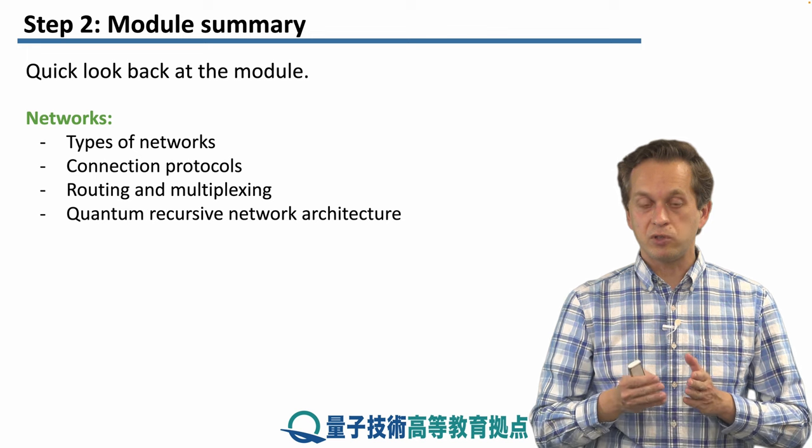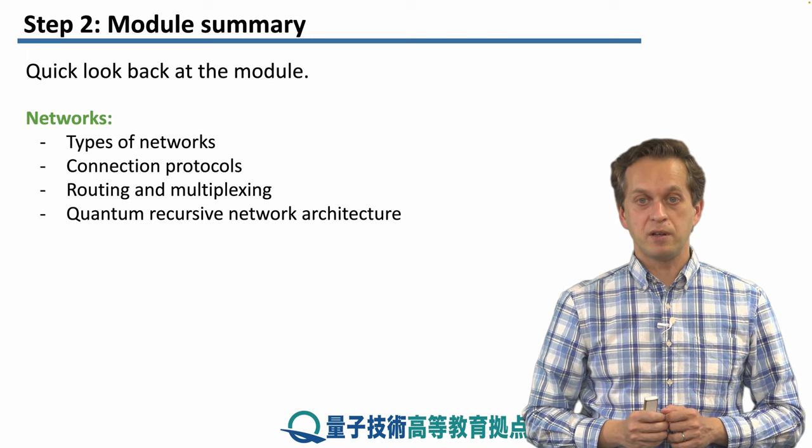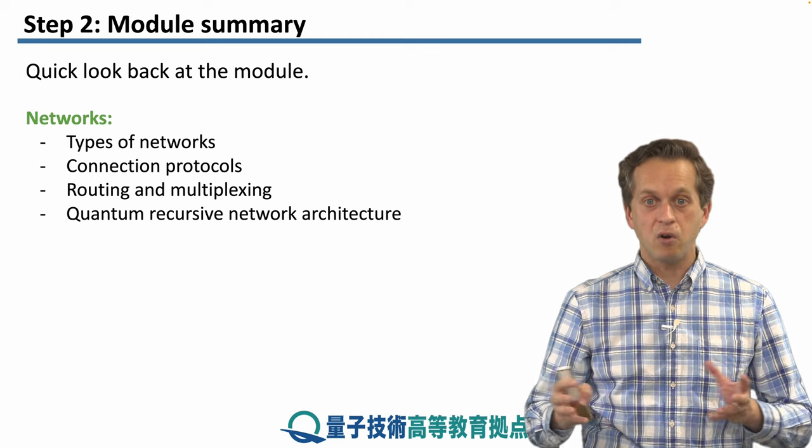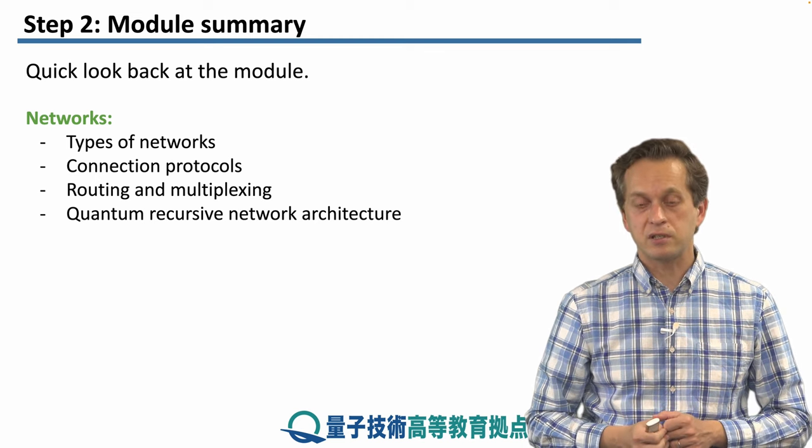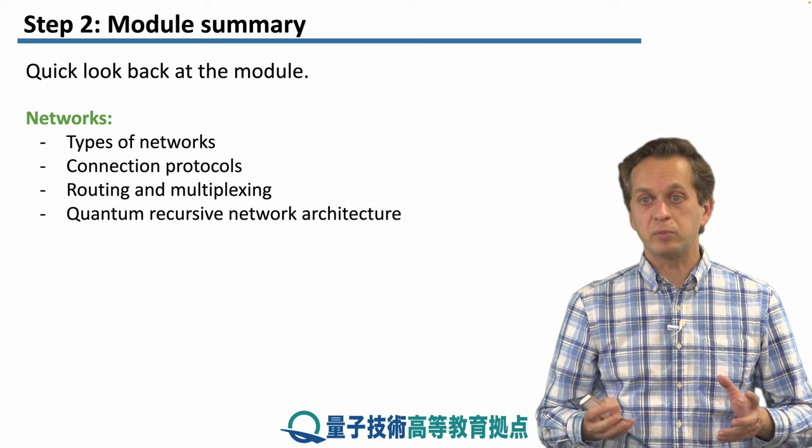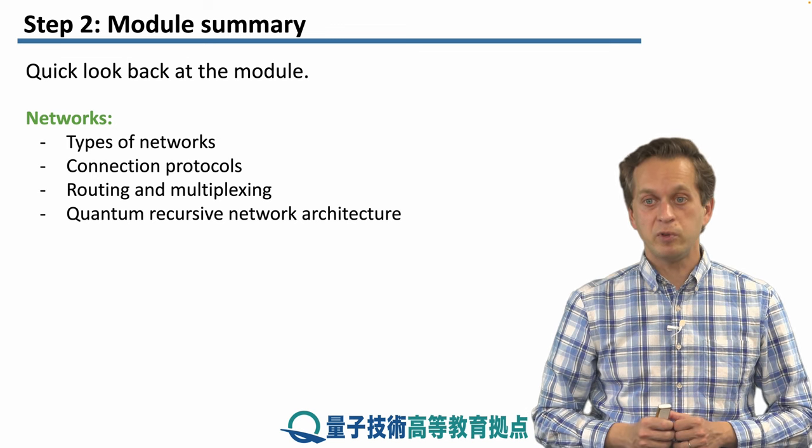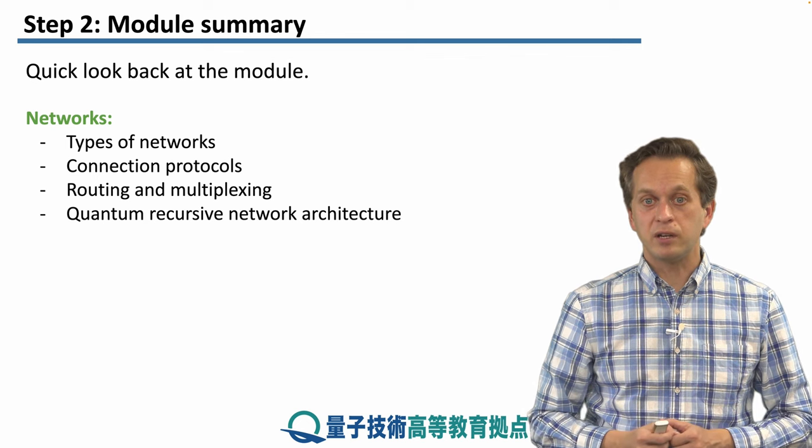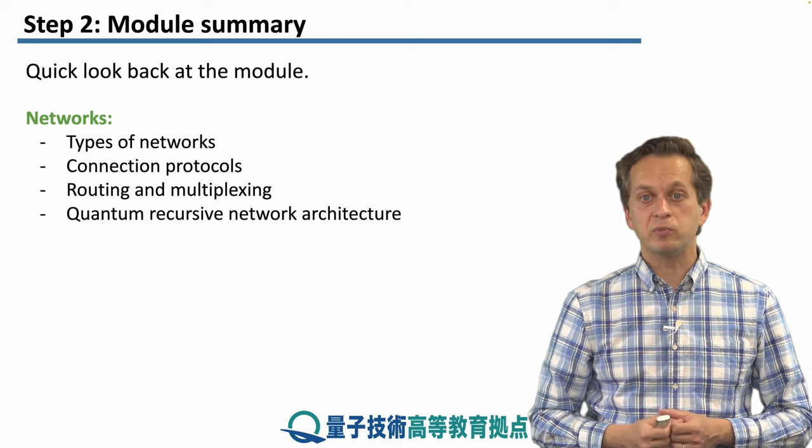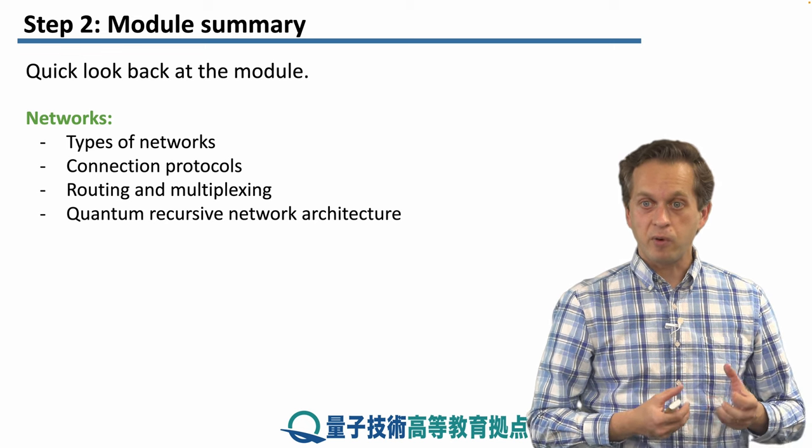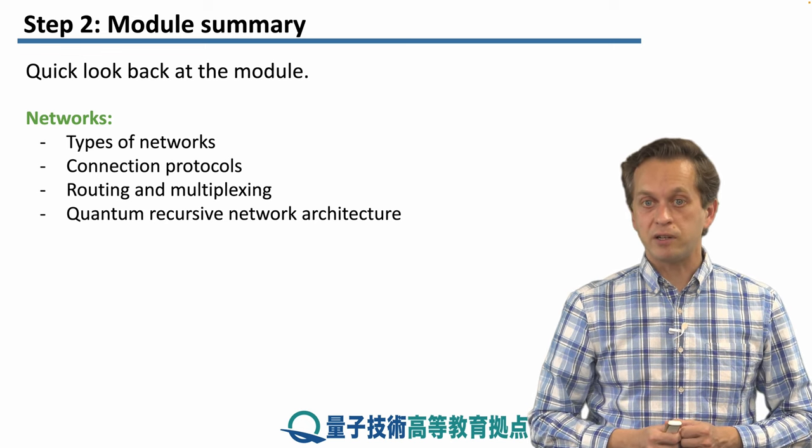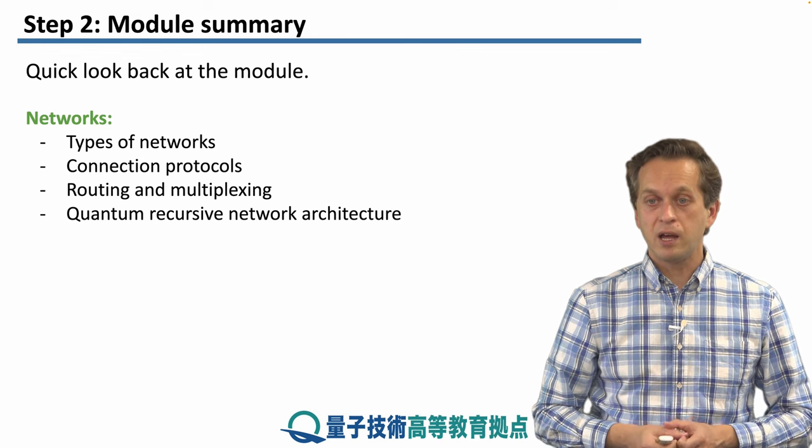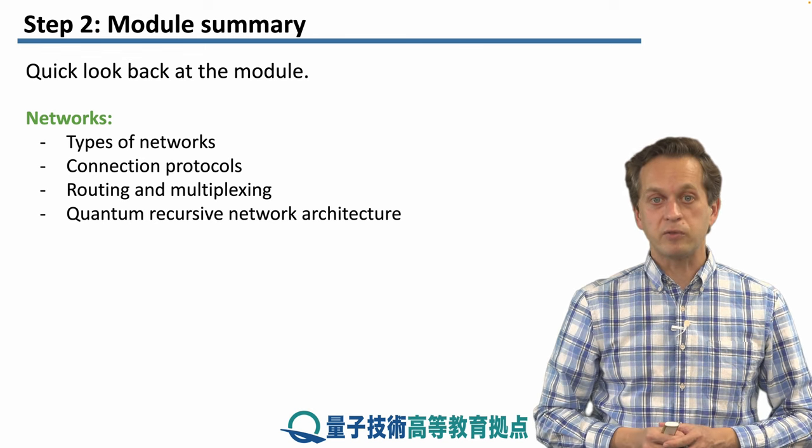And before moving on to our lesson about routing and multiplexing, we were thinking how can we choose an appropriate path through a vast and potentially heterogeneous network or internet. And how can we share the resources of such a network if multiple users are trying to communicate together. Finally, we brought all of these together into a lesson about quantum recursive network architecture, where we borrow an interesting and very attractive notion of recursive networks from classical networking and try to apply it in the context of quantum internet.